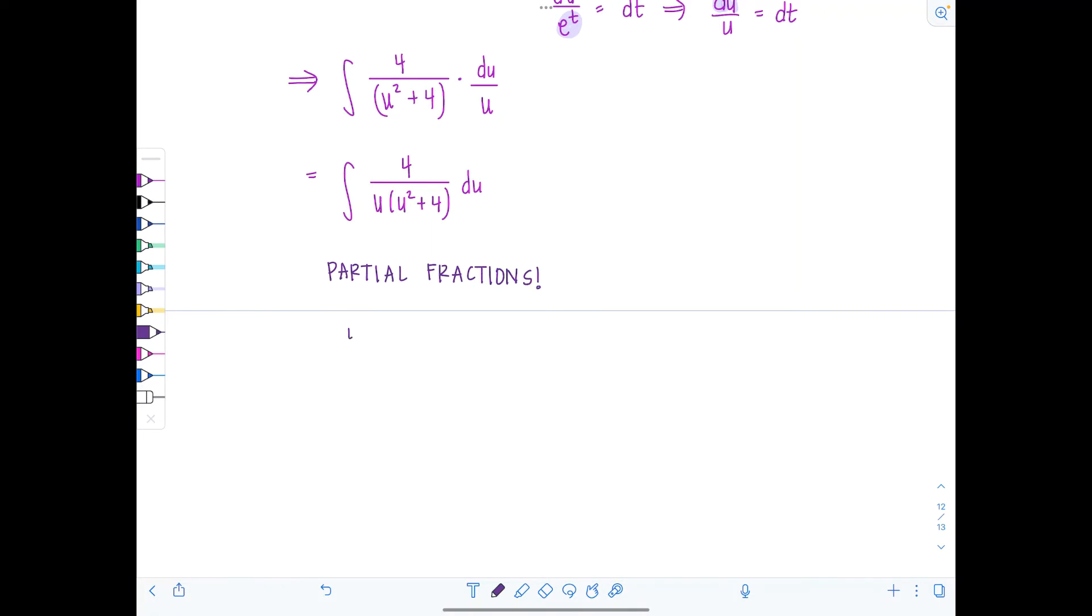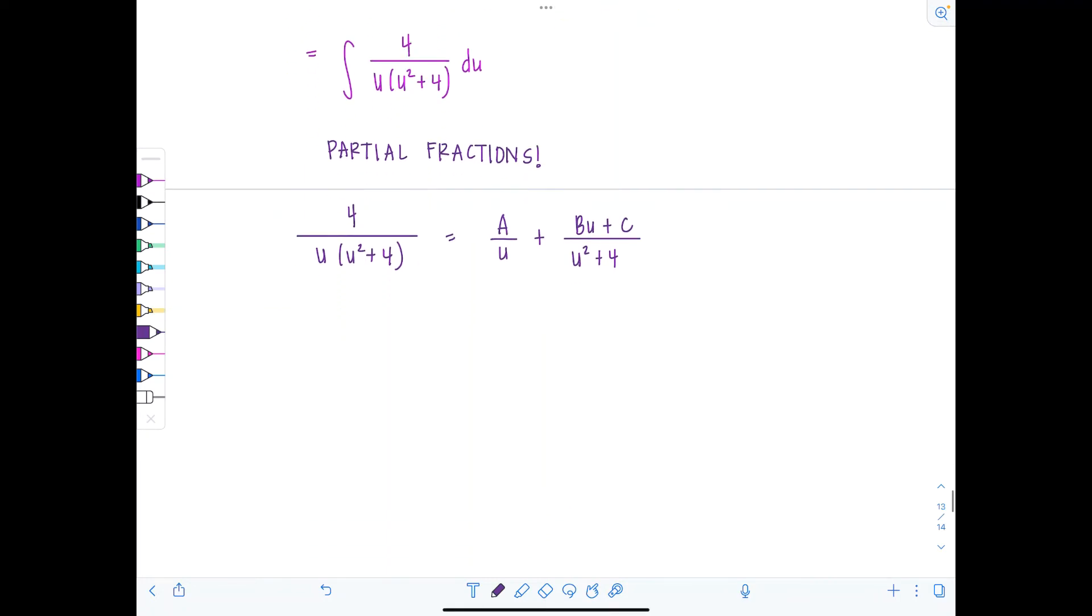I have 4 over u times u squared plus 4. So we'll have a over u plus, since u squared plus 4 is an irreducible quadratic, I need bu plus c in the numerator. And then we'll multiply through now by u and u squared plus 4. And let's see what we're left with.